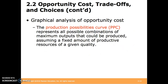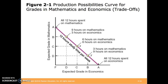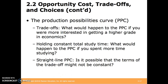We can analyze opportunity costs through a graph. The production possibilities curve, or PPC, represents all possible combinations of maximum outputs that could be produced, assuming a fixed amount of productive resources of a given quality. In this example, we have 12 available hours to study either economics or mathematics. We can split them in any particular way, and this graph should suggest what expected grade we would receive from spending any number of those hours in either area.